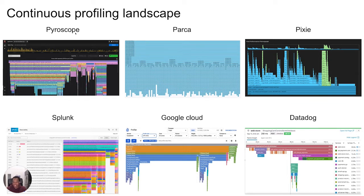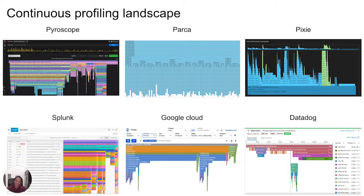you have Pyroscope, Parca, Pixie — all of those are open source profilers. Then on the enterprise side, you have companies like Splunk, Google Cloud, Datadog, who also have continuous profilers as well. Basically, if you take nothing else away from this talk, all of these have the same kind of output in general, but they have different ways of getting there. Each one has its own quirks and pros and cons.